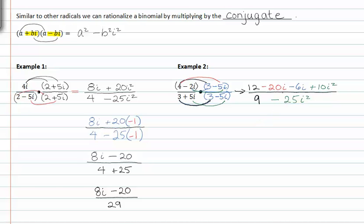Let's go ahead and simplify. These are like terms that can be combined. Twelve minus nine and i squared becomes negative one. In the denominator we have nine minus twenty five times i squared which again becomes negative one.